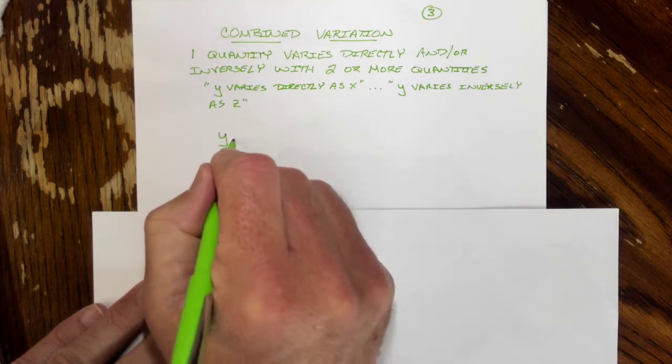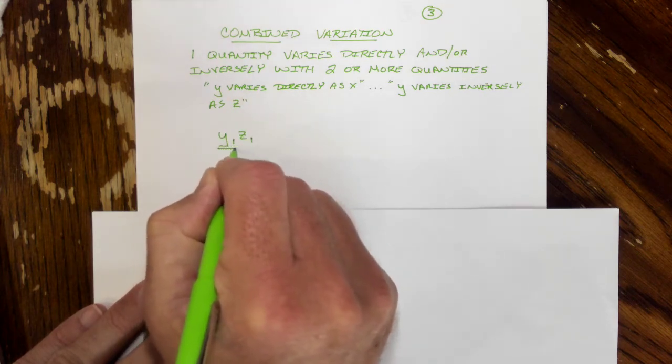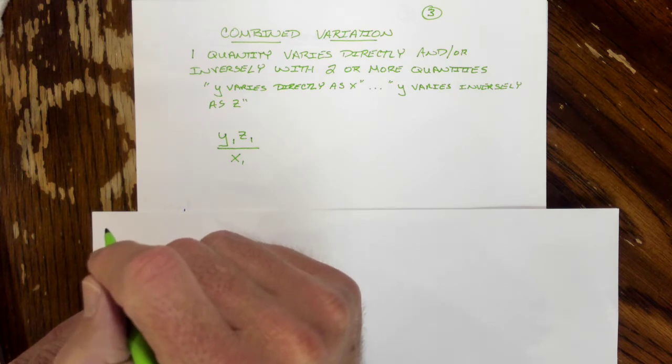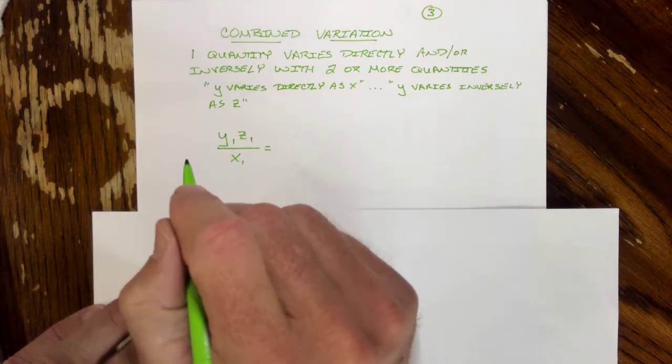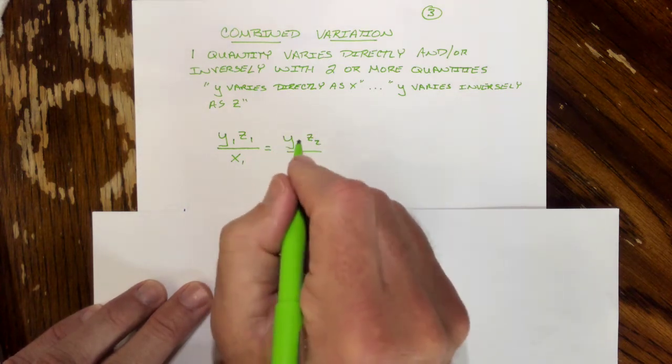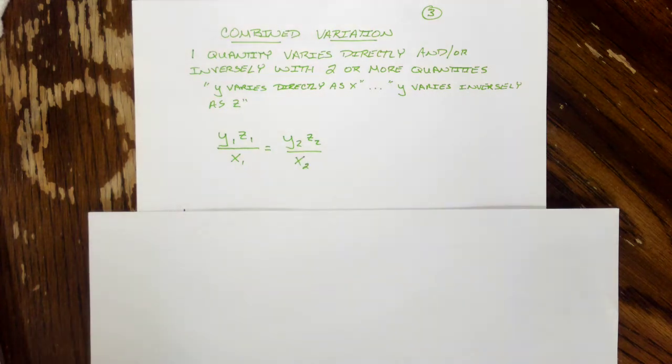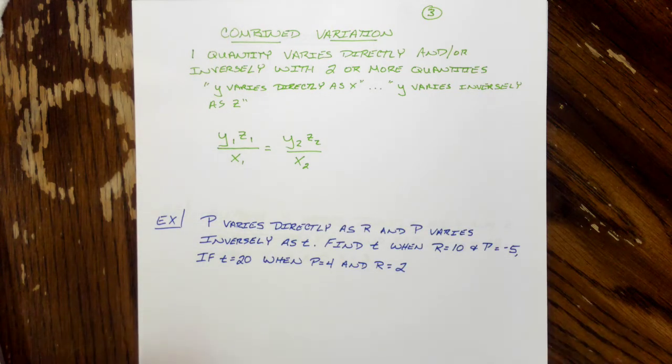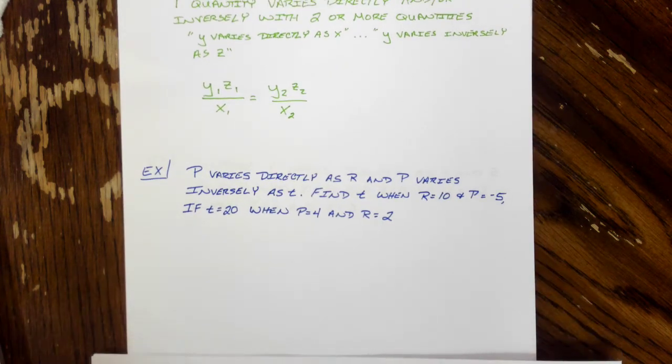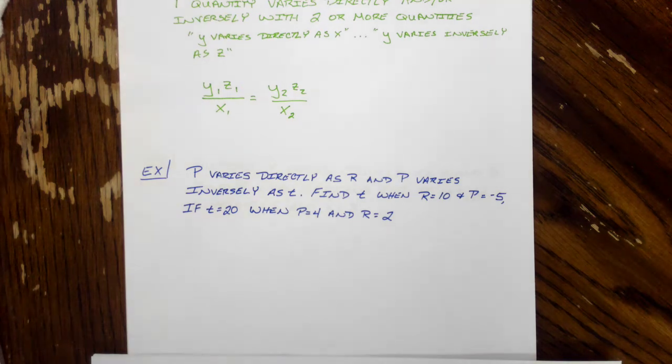It's going to look like this. We'll have Y sub 1 times Z sub 1. So the first Y and the first Z multiply together all over X sub 1 equal to Y sub 2 Z sub 2 all over X sub 2. So we've got our proportion here so let's look through and give this example and see what we can do with this. As we're looking here we want to go through and make sure we're doing everything that we need to in terms of labeling.